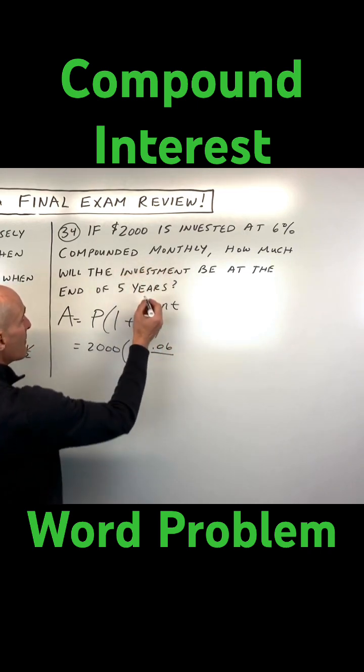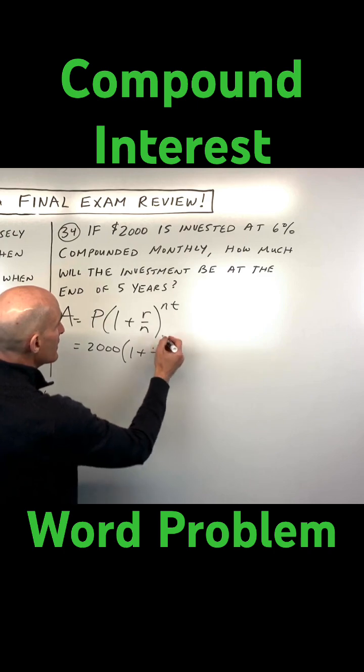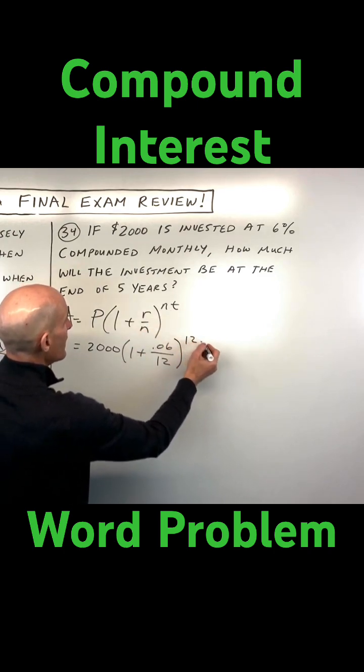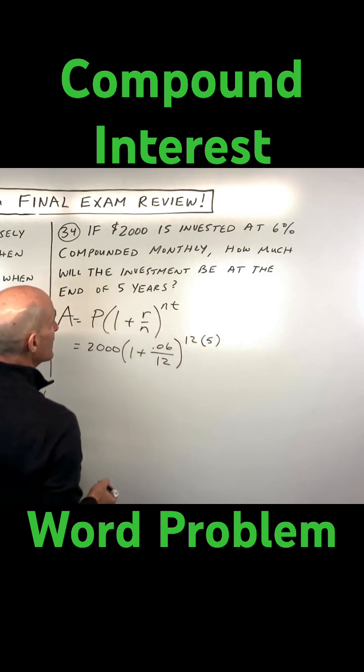N is the number of times you compound in a year. So monthly is 12. This n and this n are the same. And we want to know how much you'll have after the end of five years.